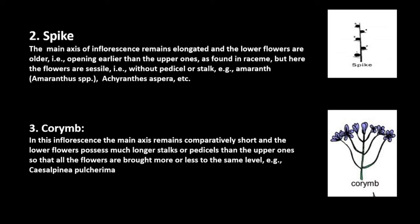The second category is the Spike inflorescence. The main axis remains elongated, similar to that of the Raceme — the lower flowers are older and open earlier than the upper ones, with younger flowers towards the tip. But here the flowers are sessile, that is, without a pedicel or stalk. Examples include Amaranthus and Achyranthes species. The inflorescence is a spike.